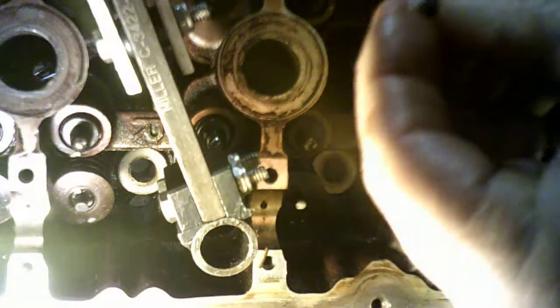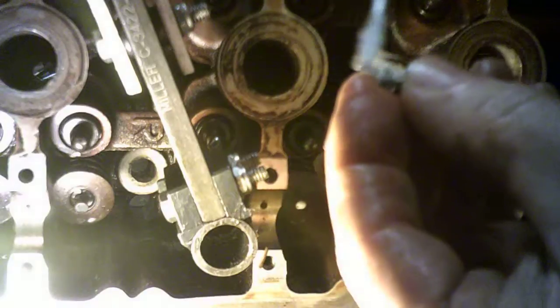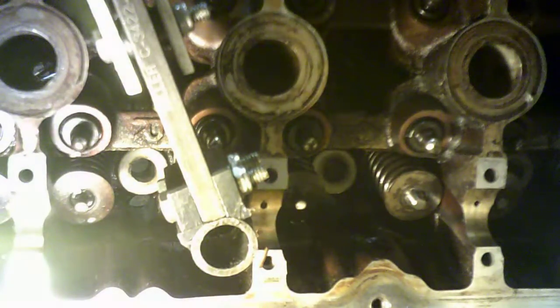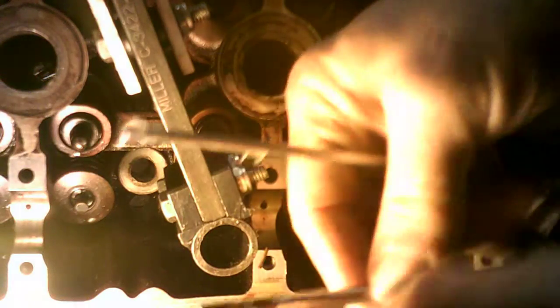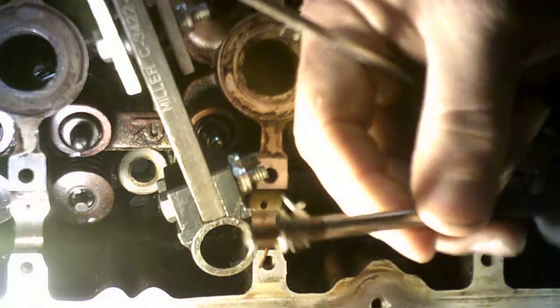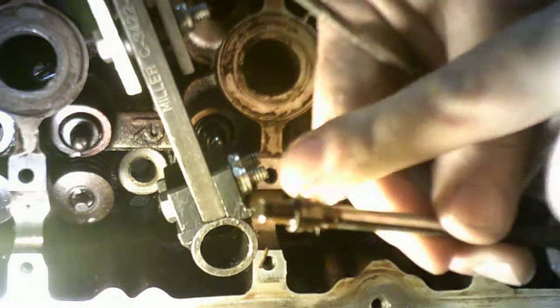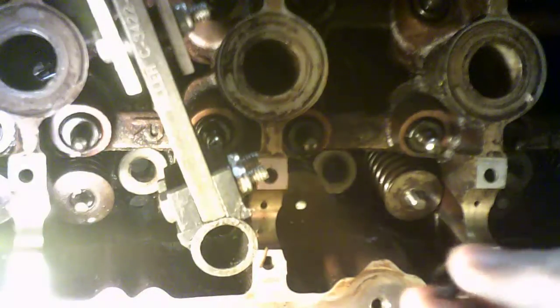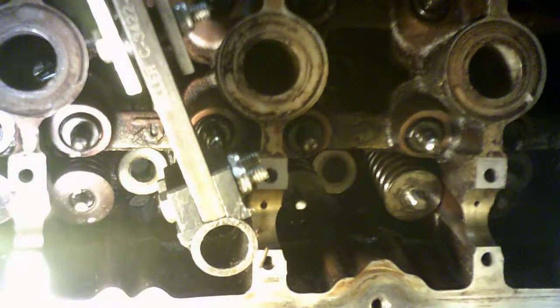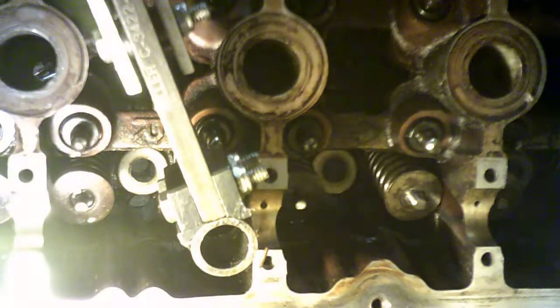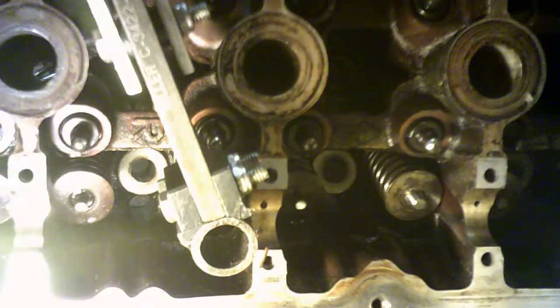Same thing for the other valve stem retainer: put a little Vaseline on the inside to keep it in the groove at the top. When you release the spring, it wedges it in. Of course, it helps to have a valve spring compressor like this where you can get down inside overhead cam engines.